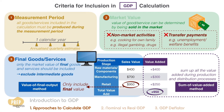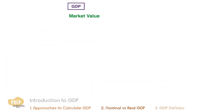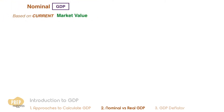When we use the current market value of the goods and services, we're calculating the nominal GDP of the economy. For an economy with several different goods and services, we can express nominal GDP as the sum of all the current prices multiplied by the quantity produced for each good.